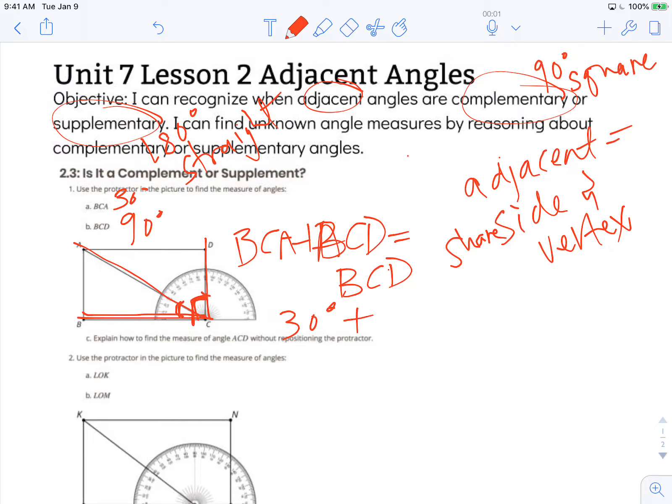I don't know the measure of ACD, but I do know the measure of angle BCD, which is 90 degrees. So, I can use my inverse operations. Right now, I'm adding 30 to something to get 90. So, I could just subtract 90 minus 30 to get this missing value here. Or, just think to myself, what plus 30 equals 90 degrees? So, I know without moving that protractor that the measure of angle ACD is 60 degrees.